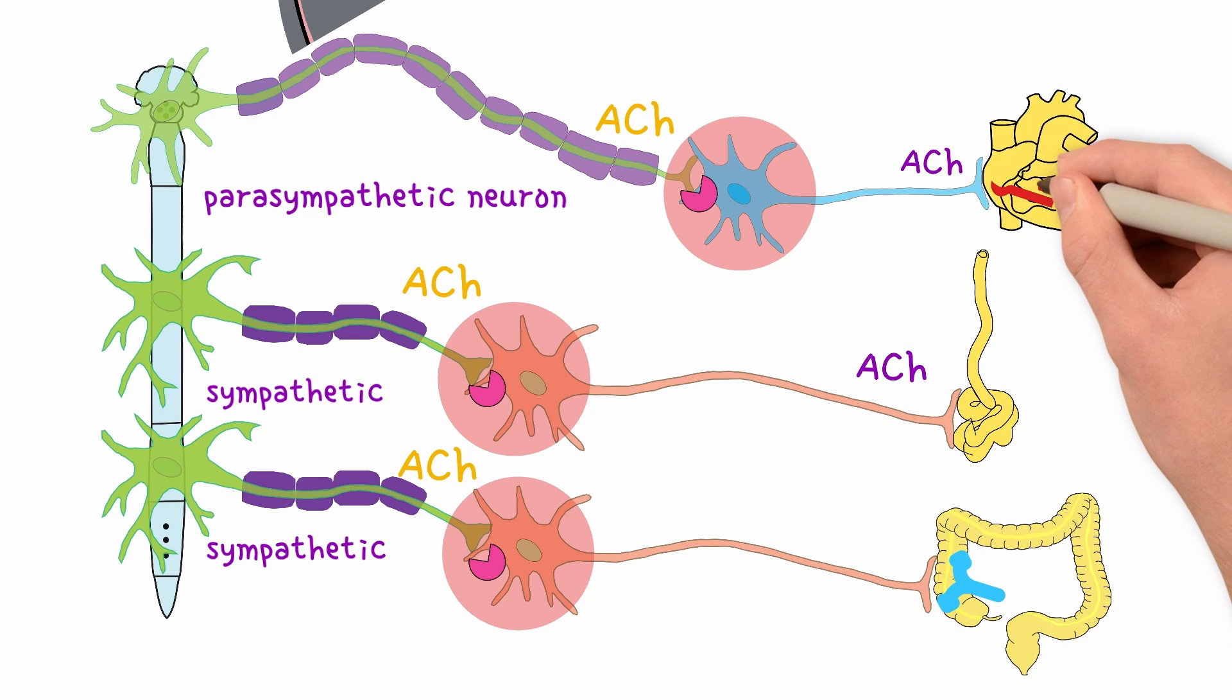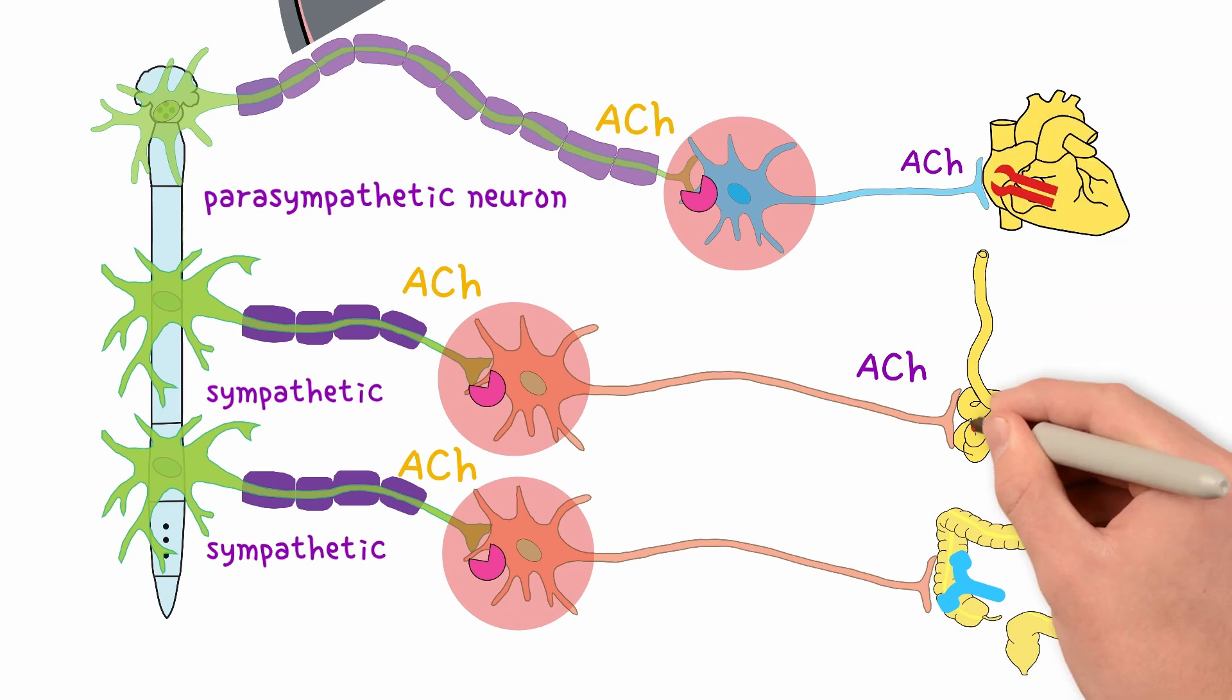At the end organ level, the receptors are muscarinic. There is one high-yield exception, the sweat glands. Anatomically, they are sympathetic. But pharmacologically, they are cholinergic. The sweat glands are the one place where you find muscarinic receptors outside of the parasympathetic system.